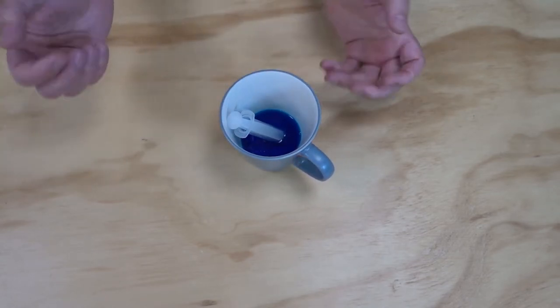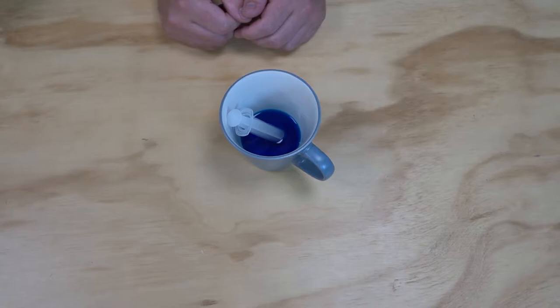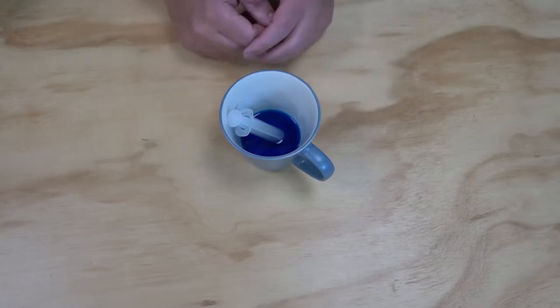Now traditionally you'll see red in thermometers, but you can use whatever color you like here. I've chosen blue because I think it'll show out inside my yellow straw. If you've got a clear straw, use any color you like. If you've got a colored straw like I do, you need to pick a color that's going to stand out inside the straw.